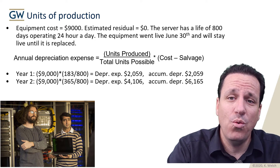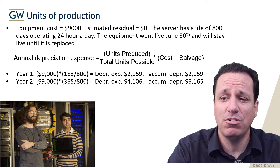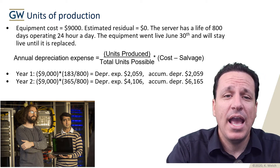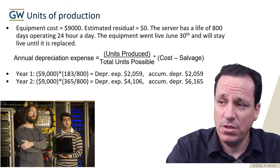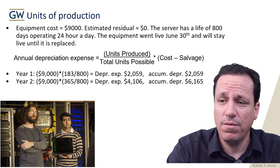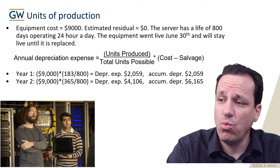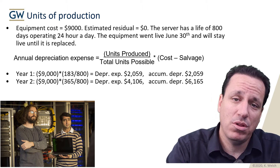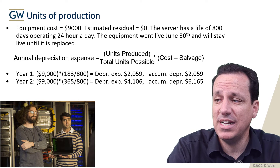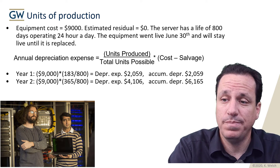In year two, we have a full year — 365 days. We take 365 days divided by 800, multiply that by $9,000 following our formula, and we get depreciation expense of $4,106. The accumulated depreciation is the $2,000 plus that $4,000, which gets us to $6,165 of accumulated depreciation.